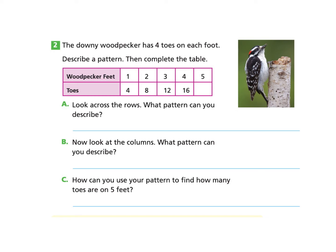Now let's take a look at the next page, page 213, part 2. The downy woodpecker has four toes on each foot. Describe a pattern, then complete the table. So they make a table here for us that shows the woodpecker's feet and the woodpecker's toes. So when the woodpecker has one foot, there will be four toes. Two feet, there will be eight toes. Three feet, there will be 12 toes. Four feet, there will be 16 toes. And five is missing. We don't have an answer for five.